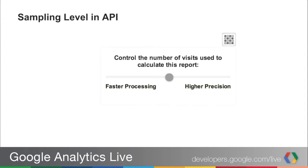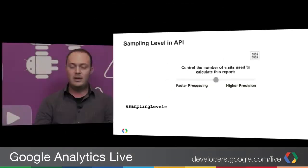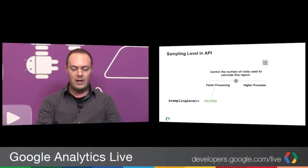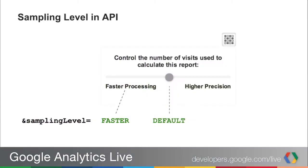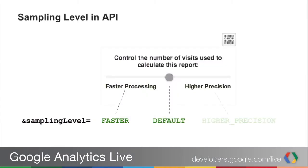This was not available in the Core Reporting API prior to this update. Now we've added a new parameter that brings consistency across the two. From your perspective, if you're querying using the Core Reporting API, there's now a new parameter called sampling level which you can set when making a request. You can set it at three different levels: faster, default, or higher precision. Default means if you don't provide this parameter, it uses the same value as what you'd see in the web interface.